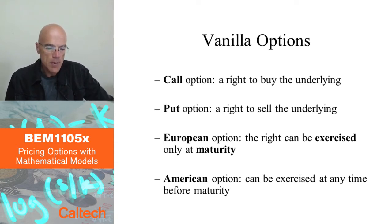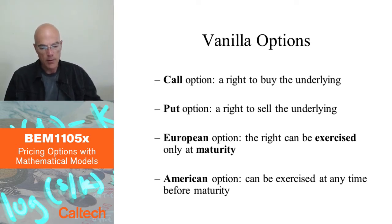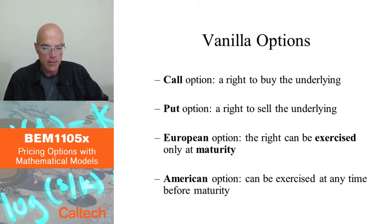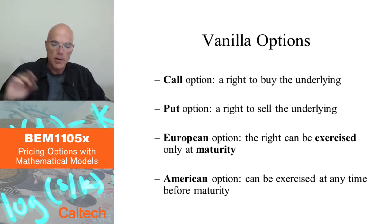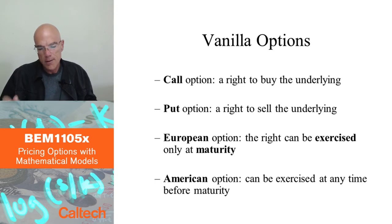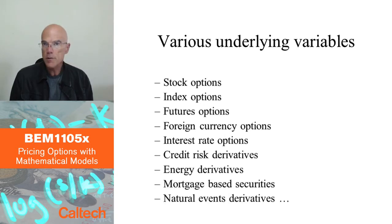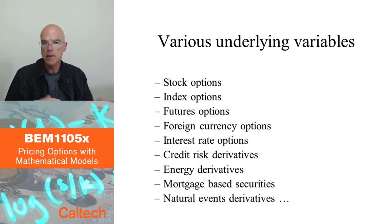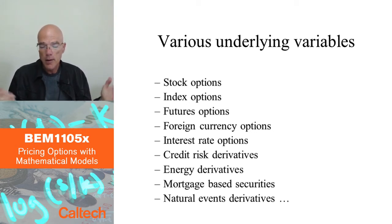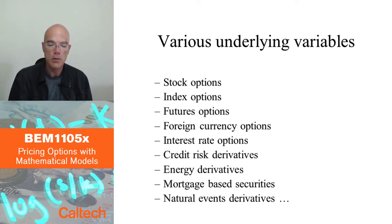These names don't really make that much sense — they are kind of geographical names, but you can Google around and see where they come from. It has nothing to do with the actual option features. There is also Asian options, which I'll mention in the next slide. There is a Russian option because it was analyzed by a Russian mathematician. So the names don't really mean that much. We are mostly going to consider stock options.